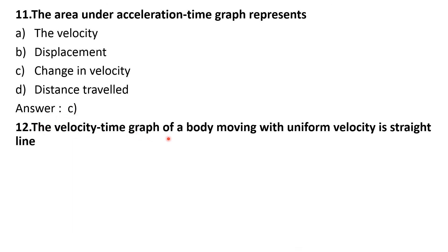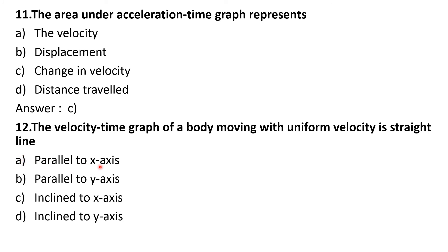12th question. The velocity-time graph of a body moving with uniform velocity is a straight line — options: A) parallel to x-axis, B) parallel to y-axis, C) inclined to x-axis, D) inclined to y-axis. In a velocity-time graph with velocity along y-axis and time along x-axis, for an object moving with uniform velocity, velocity remains constant. So you get a straight line parallel to the x-axis. The answer is option A.